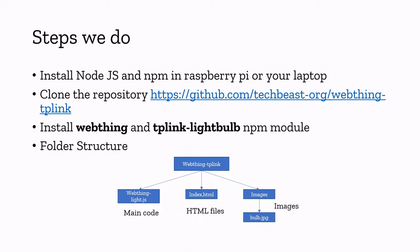The web thing module makes your light bulb expose a web thing API, so you can use a URL to control your smart bulb. The TP-Link lightbulb module provides commands to turn it on, turn it off, control the brightness, and much more. We are going to combine both npm modules into our Node.js code to develop a simple application.